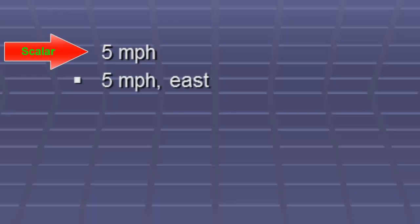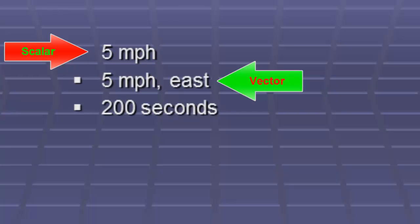Let's take a look at a few examples. 5 miles per hour. Is there any direction? No. There are units, but no direction. So it's a scalar. 5 miles per hour east. That's a vector. 200 seconds. No direction. Therefore, it's a scalar.